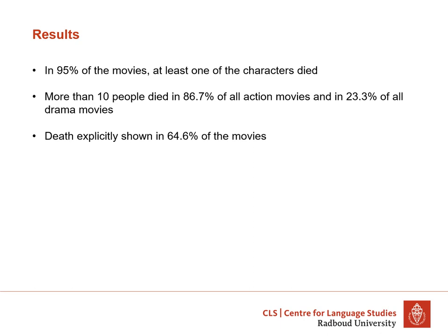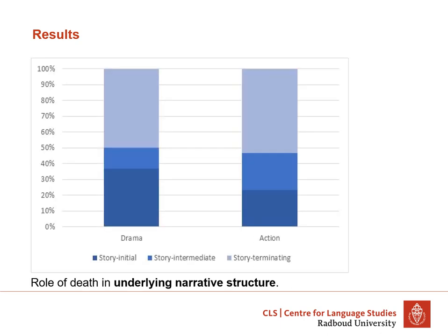Looking at the results, we found that in 95% of all movies at least one of the characters died. There was a difference between action movies and drama movies — in almost 87% of action movies more than 10 people died, but this was the case for only 23% of drama movies. We also found that death was explicitly shown in 64.6% of all movies, and this did not differ between drama movies and action movies.